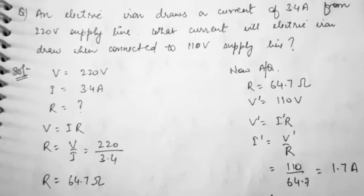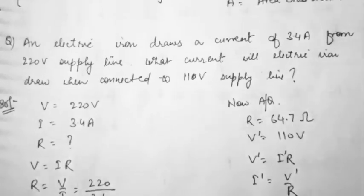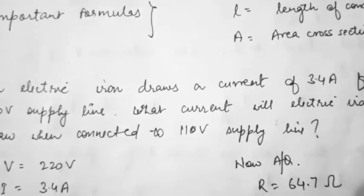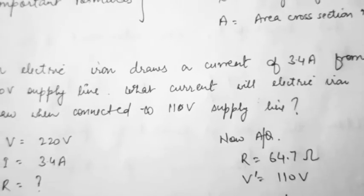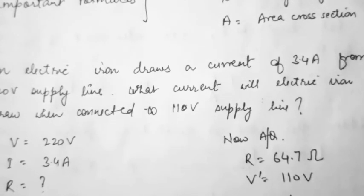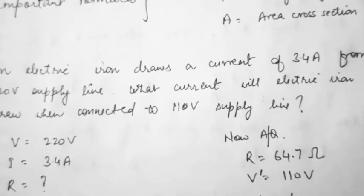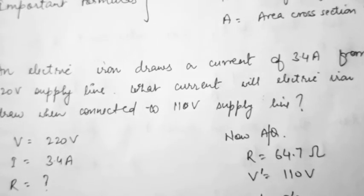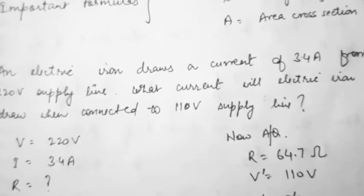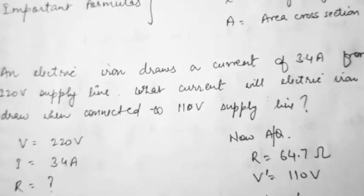The first question is: an electric iron draws a current of 3.4 ampere from a 220 volt supply line. What current will the same electric iron draw when connected to a 110 volt supply? In the first case, it is given that the current drawn is 3.4 ampere and the supply line is 220 volt.